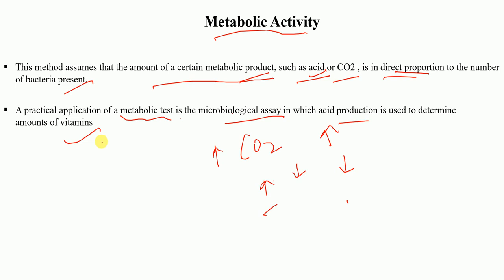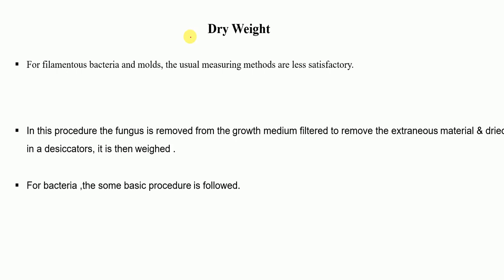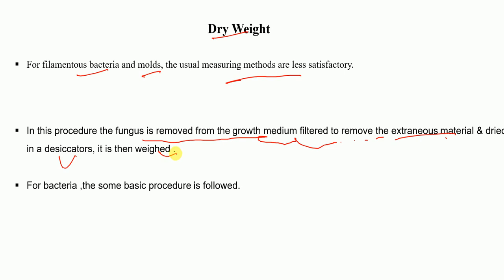Finally, dry weight is another indirect measurement of bacterial growth. For filamentous bacteria and molds, the usual measuring methods are less satisfactory. The fungus or bacteria is removed from the growth medium, filtered to remove extraneous material, dried in a desiccator, and then weighed. Higher dry weight means more bacteria; lower dry weight means fewer bacteria. This is the indirect measurement of bacterial growth.